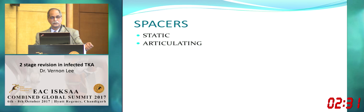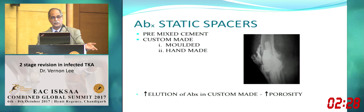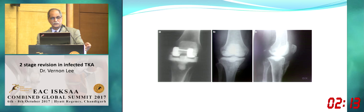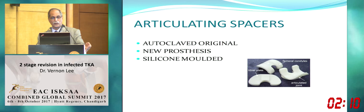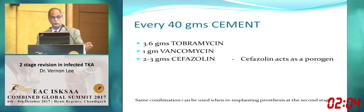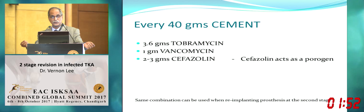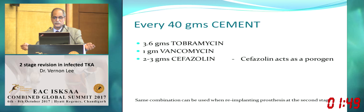Custom-made spacers are prepared on the table in two mixes of cement. Articulating spacers can be purchased or made using autoclaved original components. Every 40 grams of cement: 3.6 grams tobramycin, 1 to 3 grams vancomycin, 2 to 3 grams cefazolin — cefazolin acts as a porogen, increasing cement porosity. Re-implantation is done when inflammatory markers normalize. Rifampicin is extremely helpful in MRSA and gaining popularity, but should only be used when the wound is dry — using it while wound is still discharging reduces efficacy.